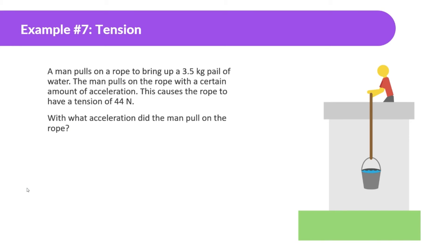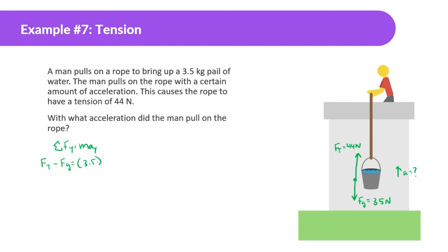A man pulls on a rope to bring up a 3.5 kilogram pail of water. The man pulls on the rope with a certain amount of acceleration. This causes the rope to have a tension of 44 newtons. With what acceleration did the man pull on the rope? We have a force of gravity of 3.5 times 10, which is 35 newtons. The rope has a force of tension of 44 newtons upward. We want to find the acceleration. Sum of all forces in Y equals mass times acceleration in Y: force of tension going up, force of gravity going down, mass of the pail of water is 3.5 kilograms.